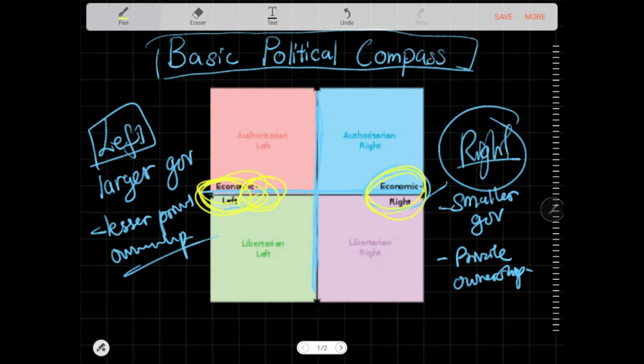So that is the economic scale, while on the social scale, we call it libertarian, and here we have authoritarian. Best handwriting in the world.